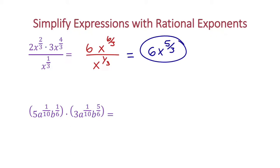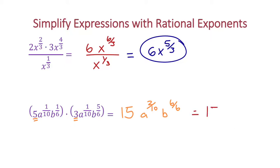For the next one, very similar — look at the coefficients 5 and 3: that's 15. Now we're going to add the exponents: we have a to the 2 tenths and b to the 6 sixths. Remember, 1 tenth plus 1 tenth is 2 tenths, and 1 sixth plus 5 sixths is 6 sixths. Simplify: 2 tenths is 1 fifth and 6 sixths is just b to the 1st power. So the answer is 15a to the 1 fifth times b.